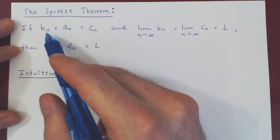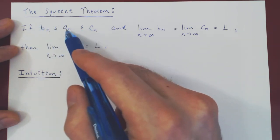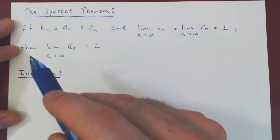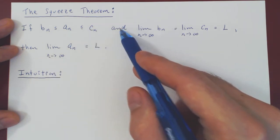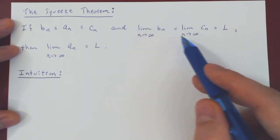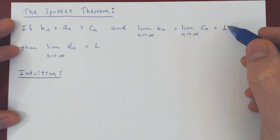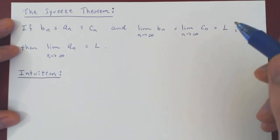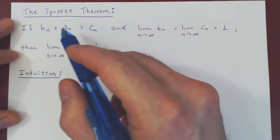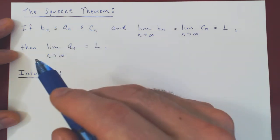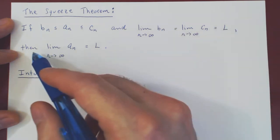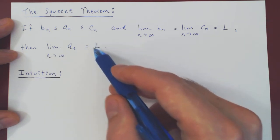We assume we have three sequences: bn, an, and cn, where an is between bn and cn for every n. We also assume that both bn and cn converge to l as n goes to infinity. l here could be a real number, or it could also be positive or negative infinity. If an is between bn and cn for every n, and both bn and cn converge to l, then automatically an must converge to l as well.